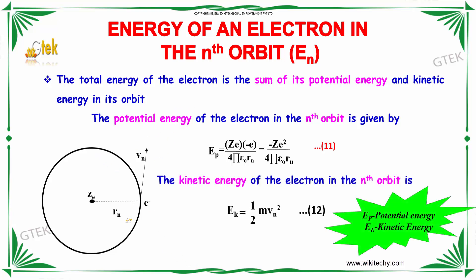The total energy of the electron is the sum of its potential energy and kinetic energy in its orbits. The potential energy of the electron in the nth orbit is given by Ep = Z·e·(-e) / (4πε₀·Rn), which simplifies to minus Z·e² / (4πε₀·Rn).